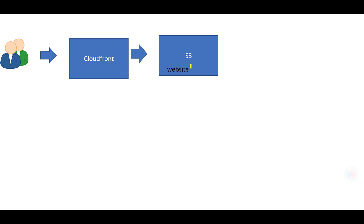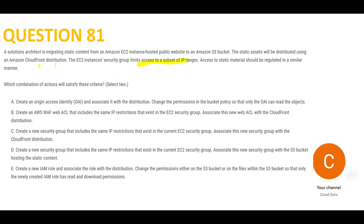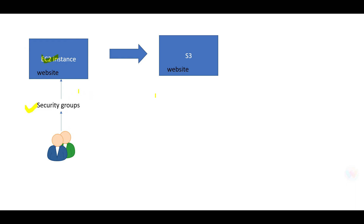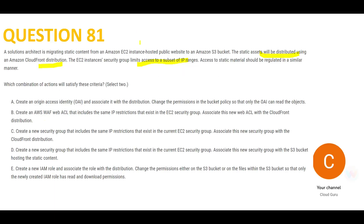The question also says after moving to S3, you will need to plug in CloudFront for distributing static assets. And the same IP range filtering that was done through security groups — you need to apply a similar limitation here. Which combination of actions will you take?